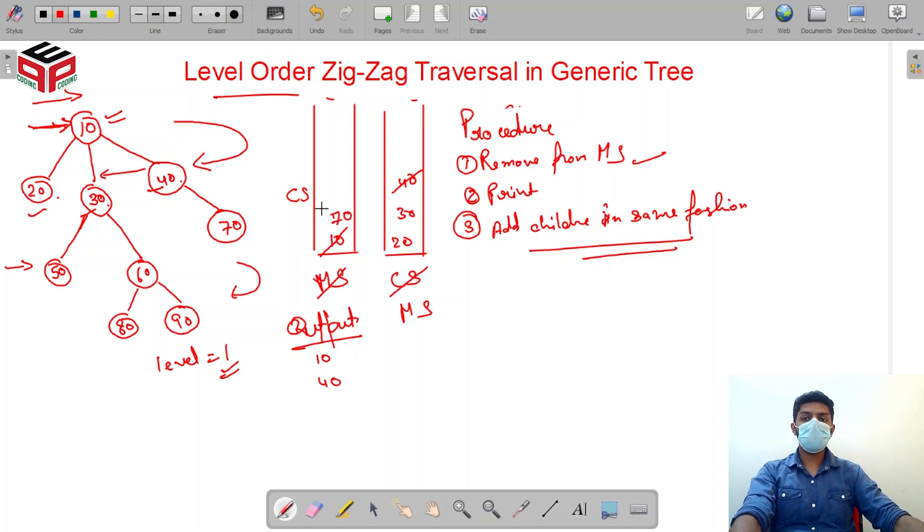Now 30 is to be removed. 30 is removed, 30 is printed. Now in order to add children of 30, we are traversing in this direction, so I won't be adding 50 and 60. I'll be adding actually 60 first and then 50. So the main thing is add the children in the same manner in which we are traversing at the level.